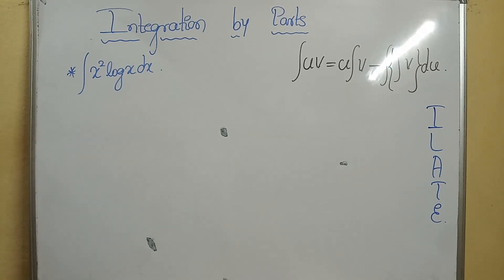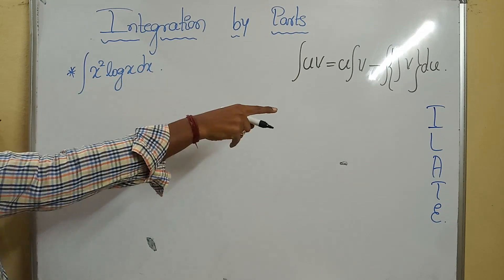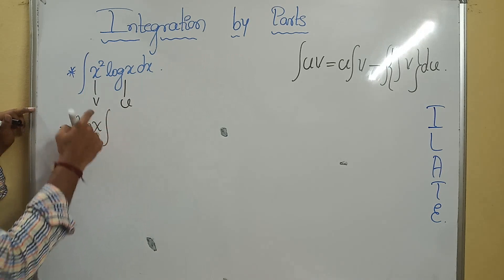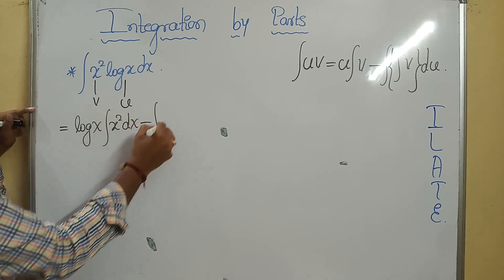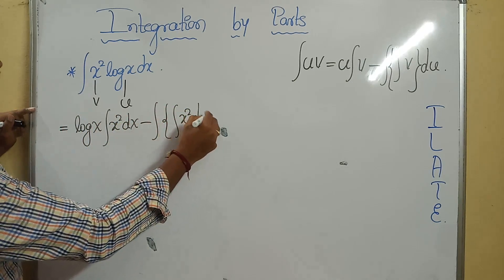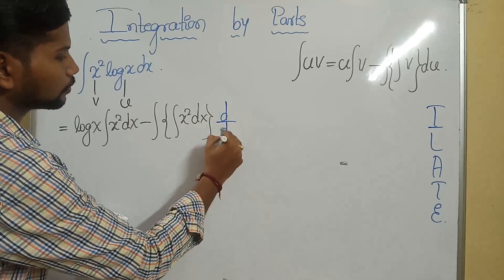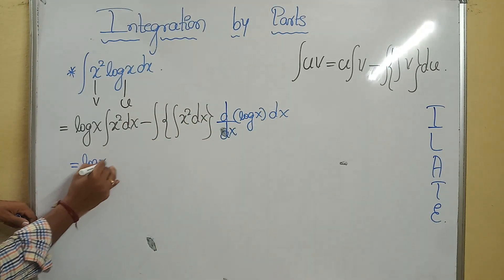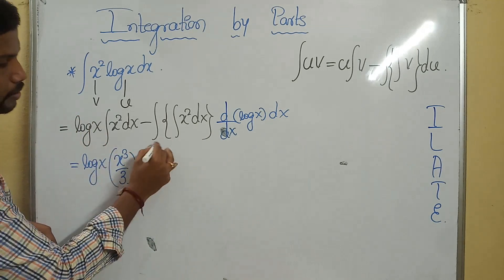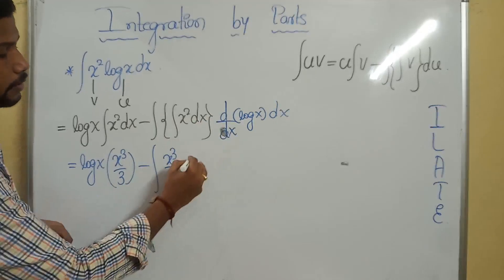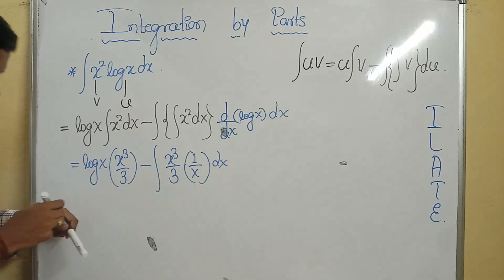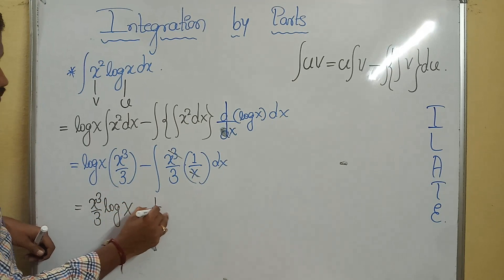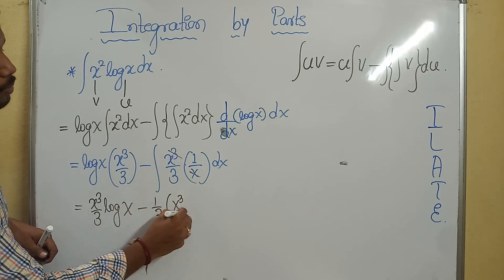Observe the next example: integral of x²·log(x) dx. Here x² is algebraic and log(x) is logarithmic. By ILATE, logarithmic comes before algebraic, so log(x) is u and x² is v. Applying the formula: log(x) times integral of x² dx, minus integral of [integral of x² dx] times d/dx(log x) dx. This gives log(x) times x³/3, minus integral of x³/3 times 1/x dx. One x term cancels, giving x³/3 · log(x) minus (1/3) times x³/3, plus c.